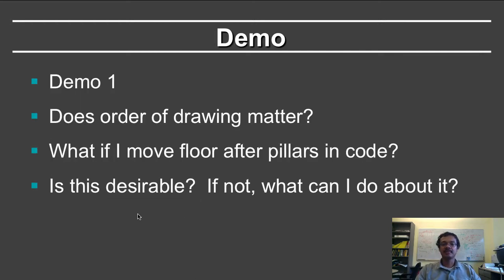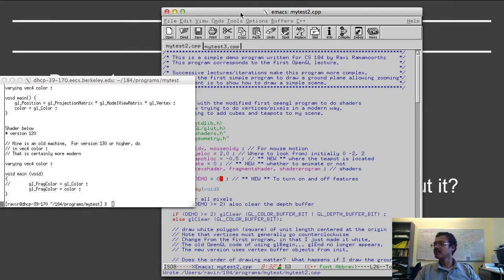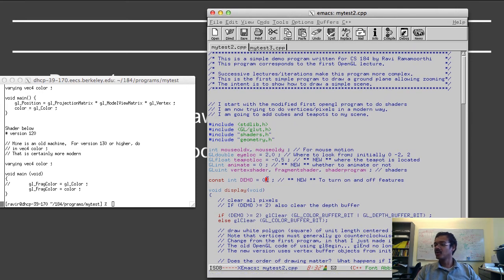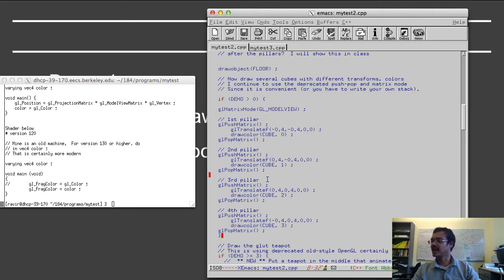So we're now ready to do a demo. Let me bring in my source code again. This will be demo one, which will include the white plane that we saw earlier, and will also include the pillars. One question I'm going to ask you once I start the demo is: does the draw order matter? What happens if I move the floor after the pillars in the code versus moving it before? I'm showing you my actual text editing environment and my compilation environment. All I'm going to do is change this to one. So it includes lines like if demo is greater than or equal to 2, do so. If demo is greater than 0, then I actually draw my first, second, third, and fourth pillars, which is just the code I showed you on the slide.